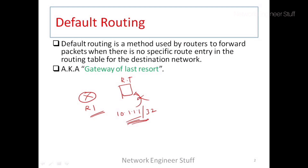The packet destined to 10.1.1.1 will be routed to the next hop defined in the default route. For example, if this router has interfaces serial 1.1 and serial 1.2, and the default route points to serial 1.2, that destination will follow that path. This is also known as the gateway of last resort, which you will find on Cisco routers.